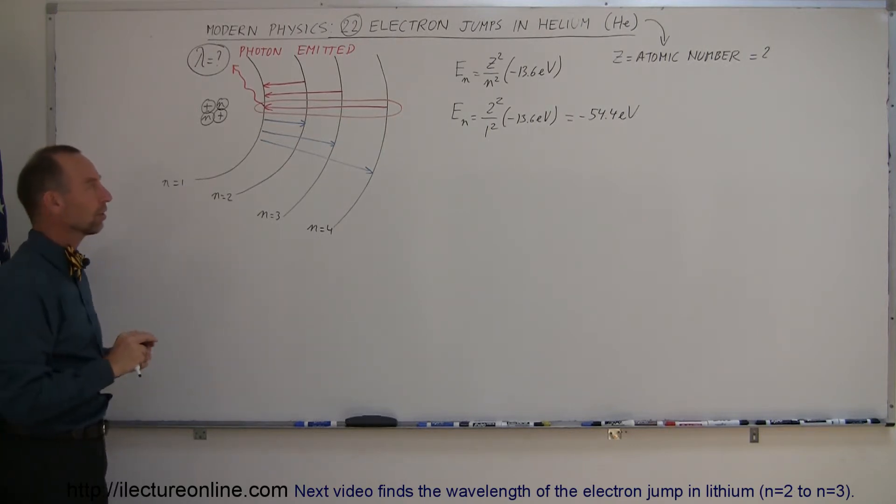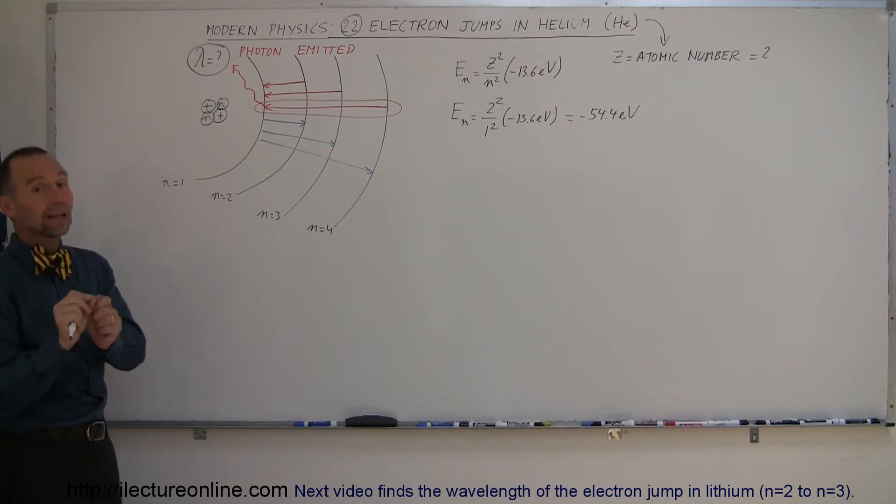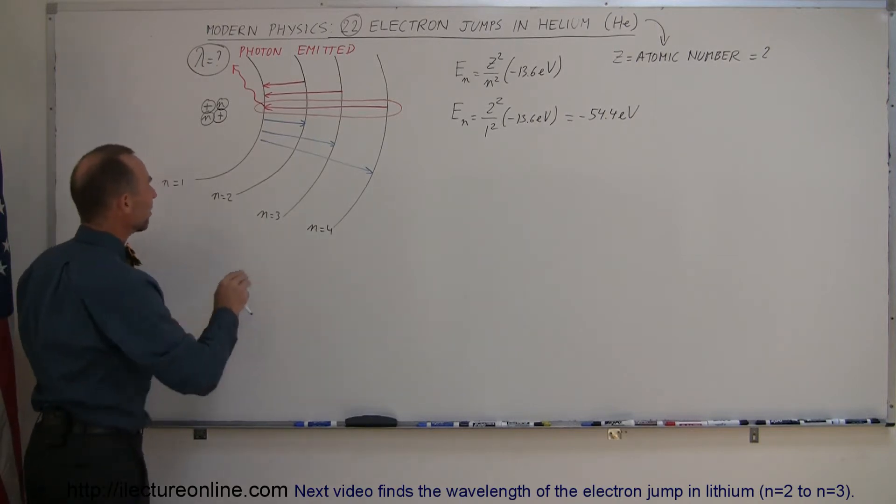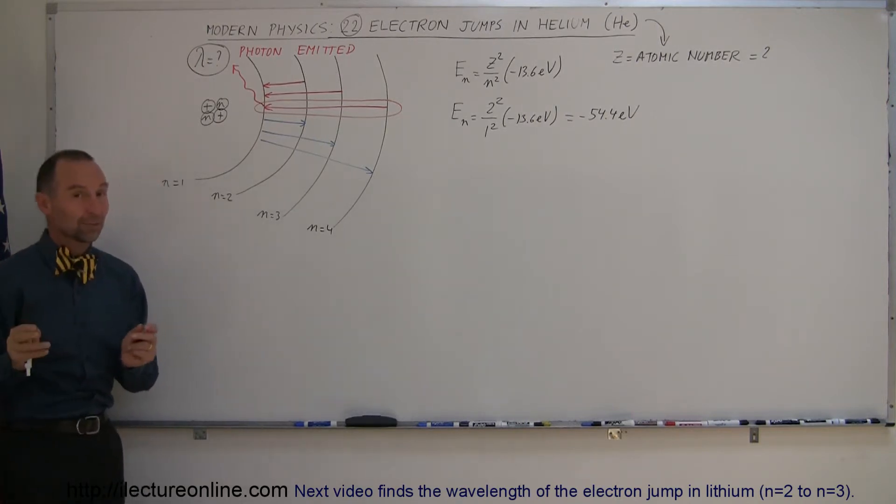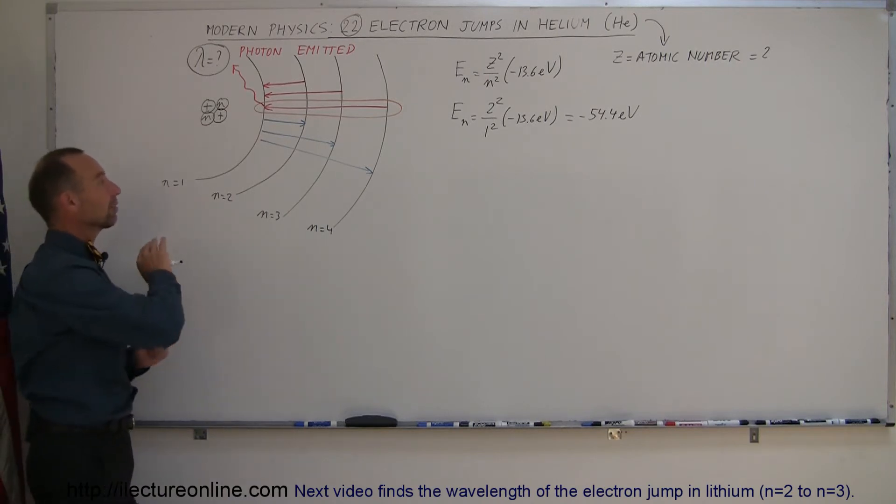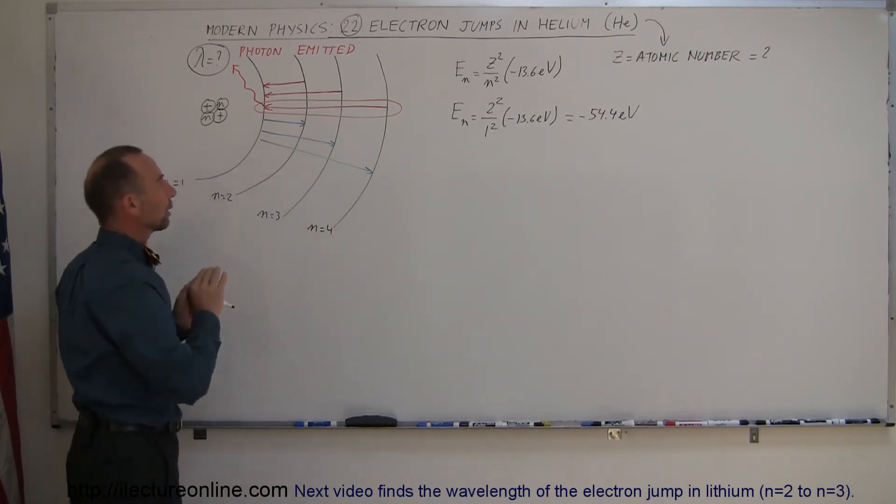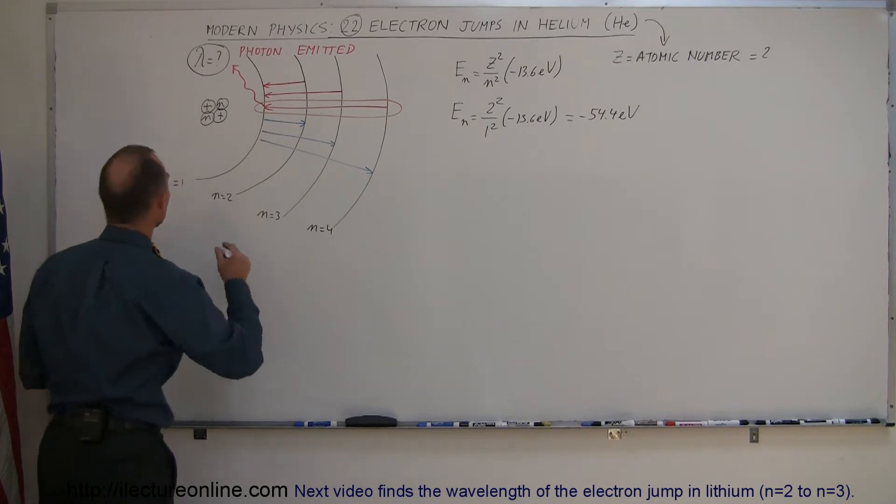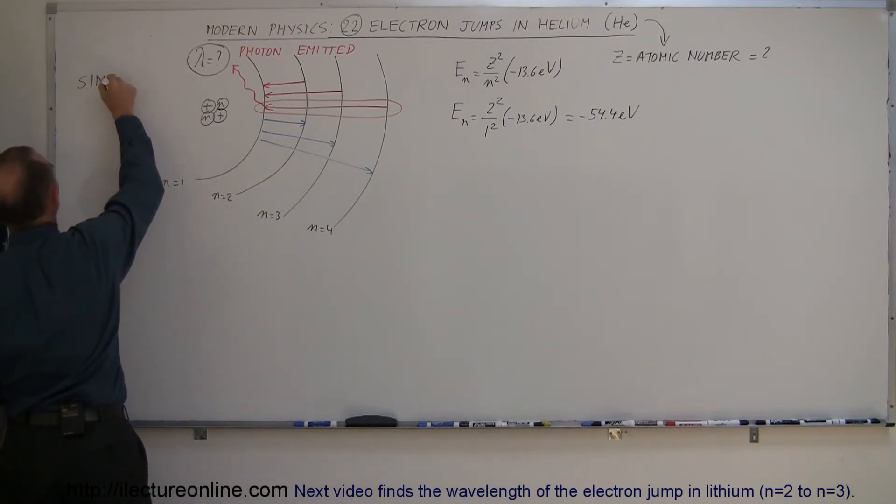Now there's one caveat to all this. That is assuming there's only one electron present in the first place. That means the other electron, because remember helium normally has two electrons, the other electron is already removed. In other words, we can only deal with ionized helium. So this is singly ionized helium.